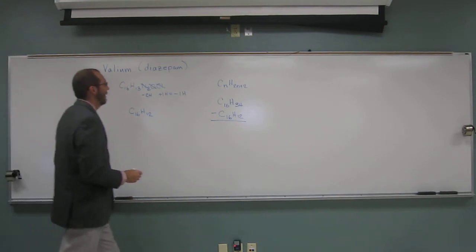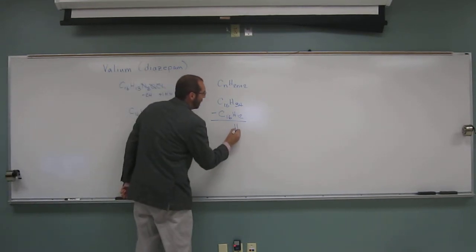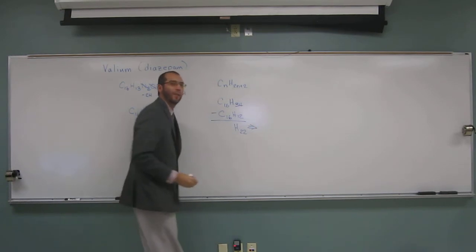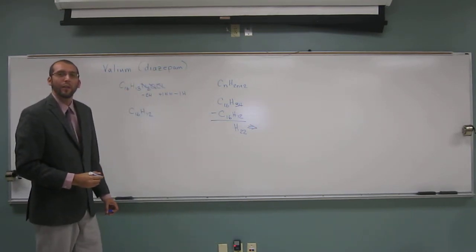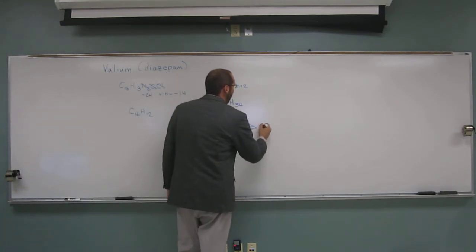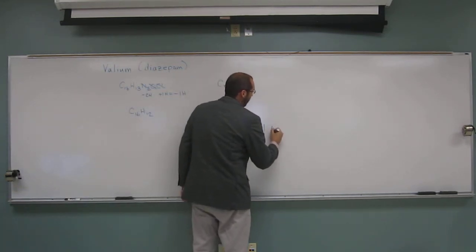22. Right, so H22. And how many units of unsaturation is that equivalent? Divide by 2, so we get 11. So if we divide that by 2, we get 11. So it's 11 degrees.